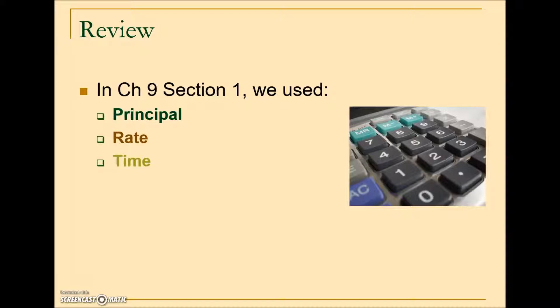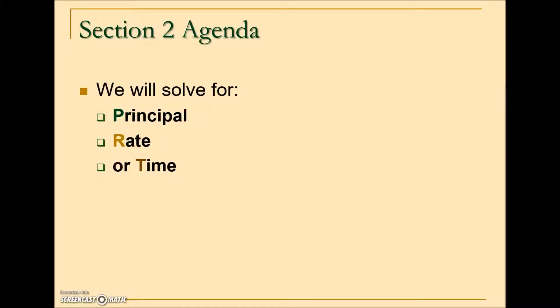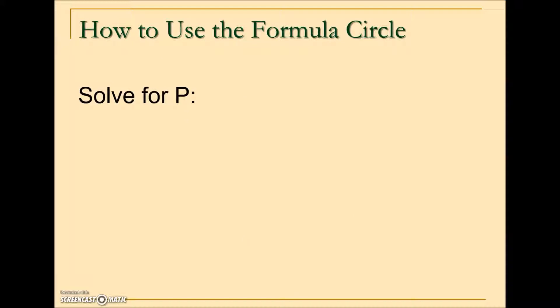As a review in the first section, we took our principal, our rate, and our time, multiplied the three values together to give us interest. In this section, we will be solving for the principal, and here we have a formula circle that will give us the other three versions for finding the missing variable.